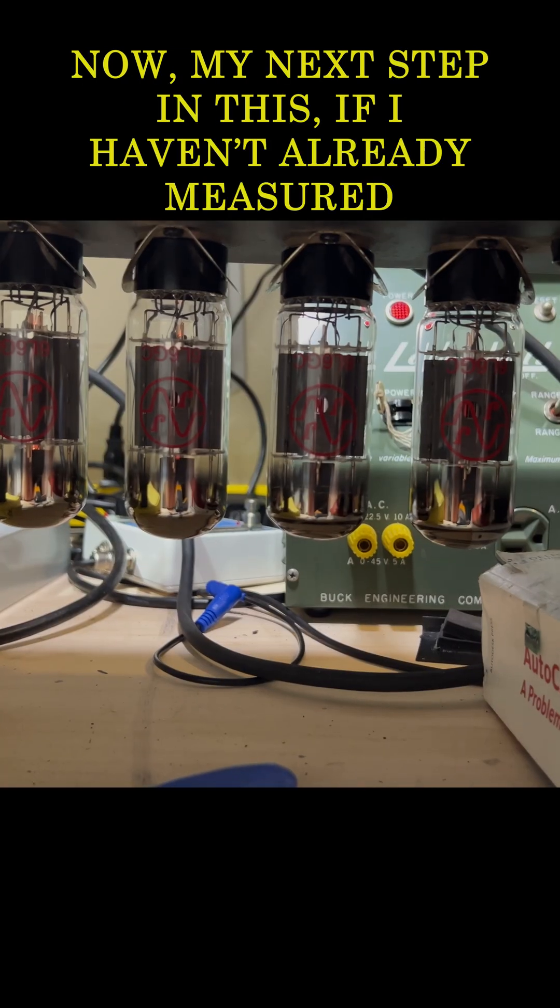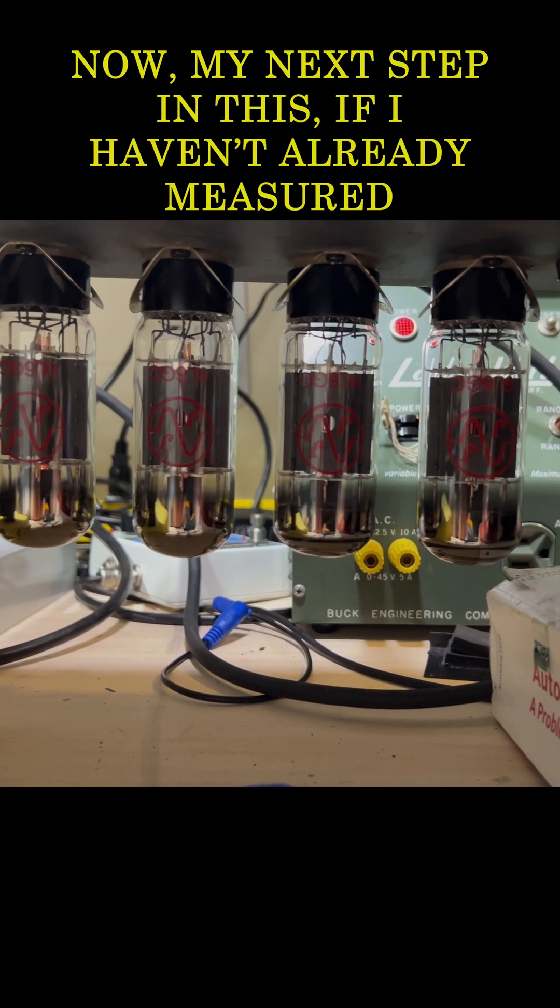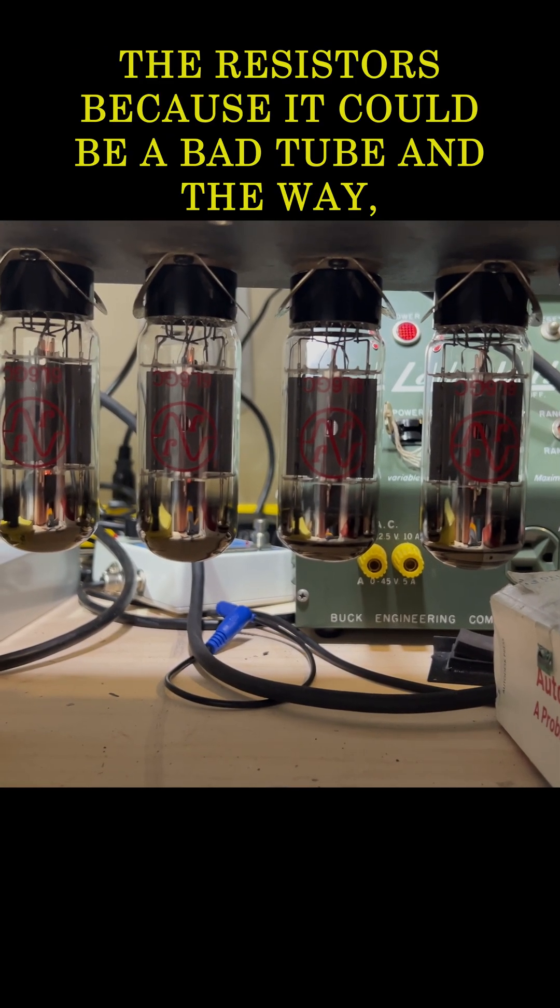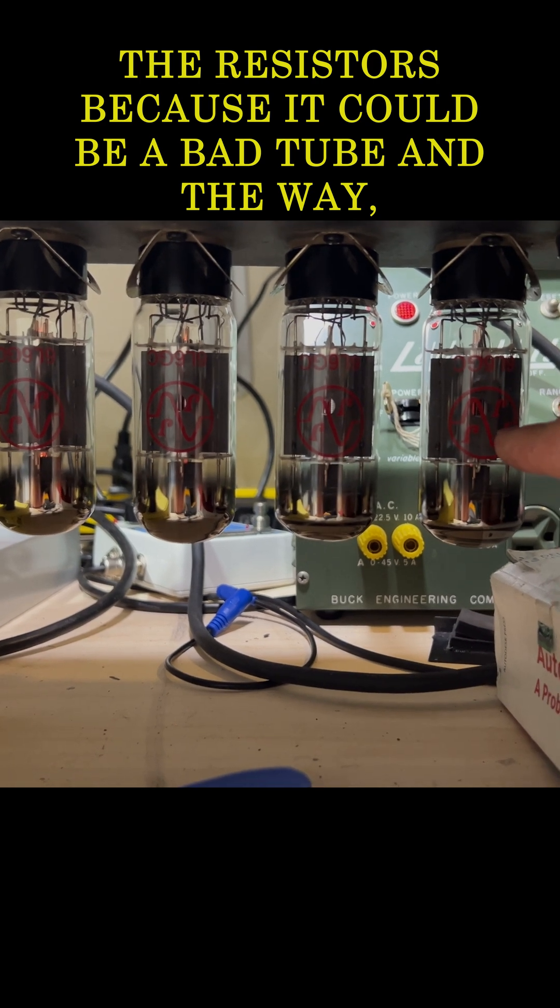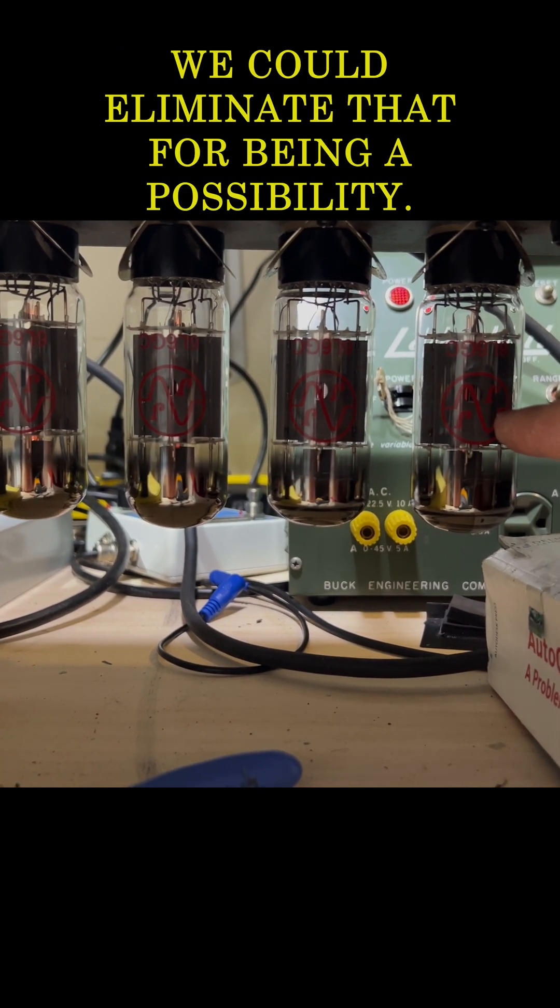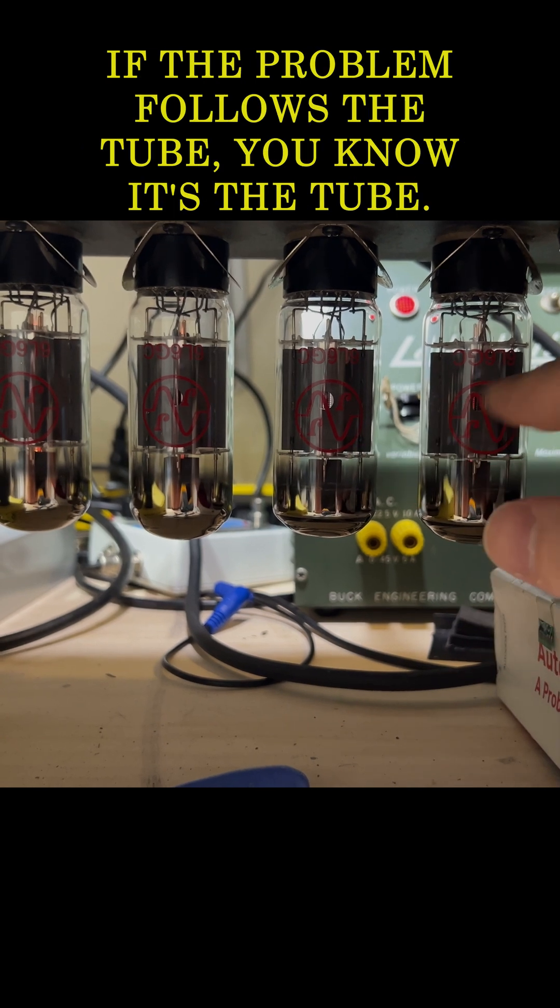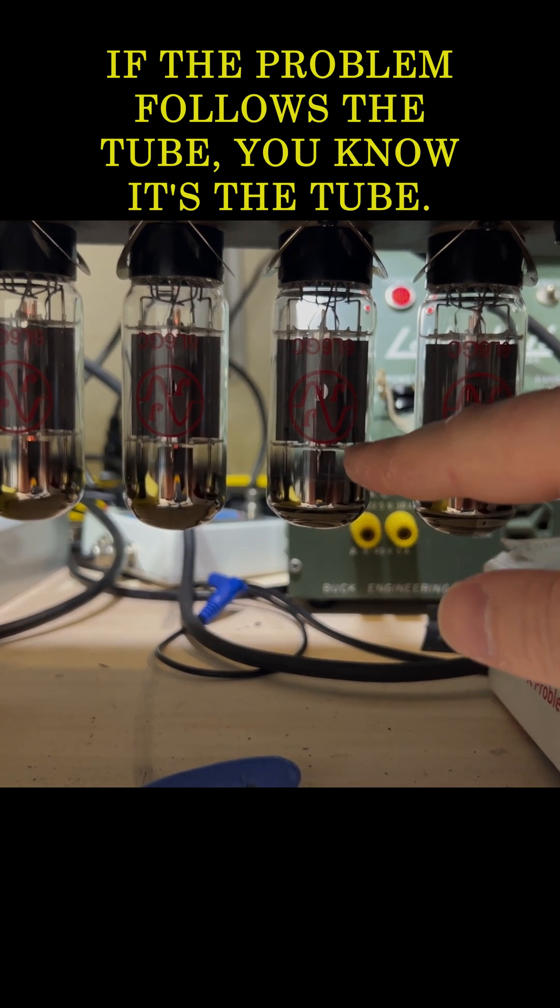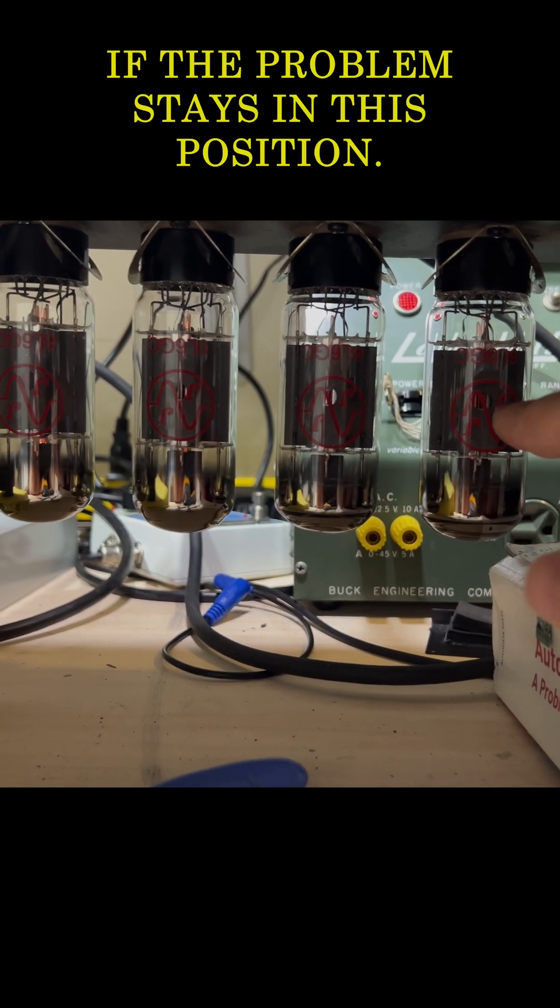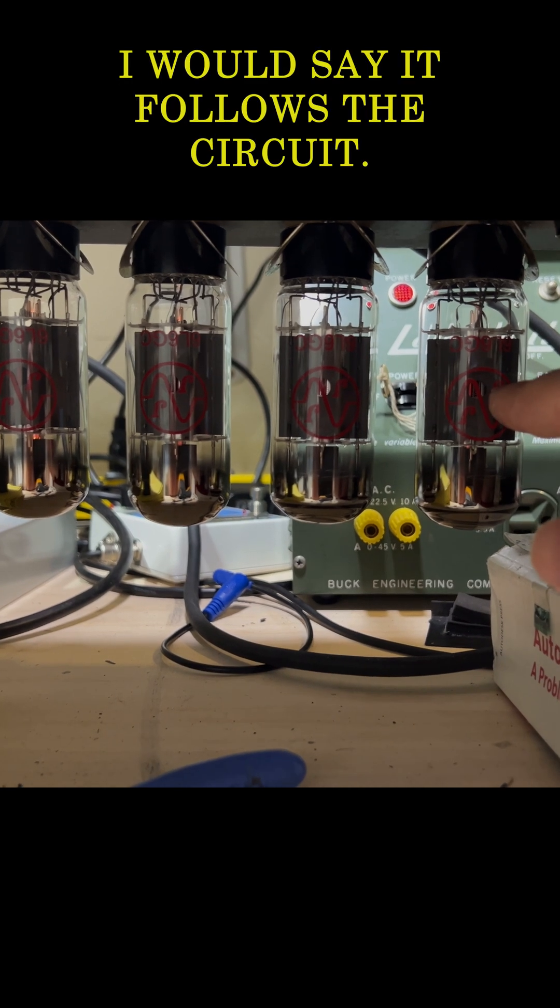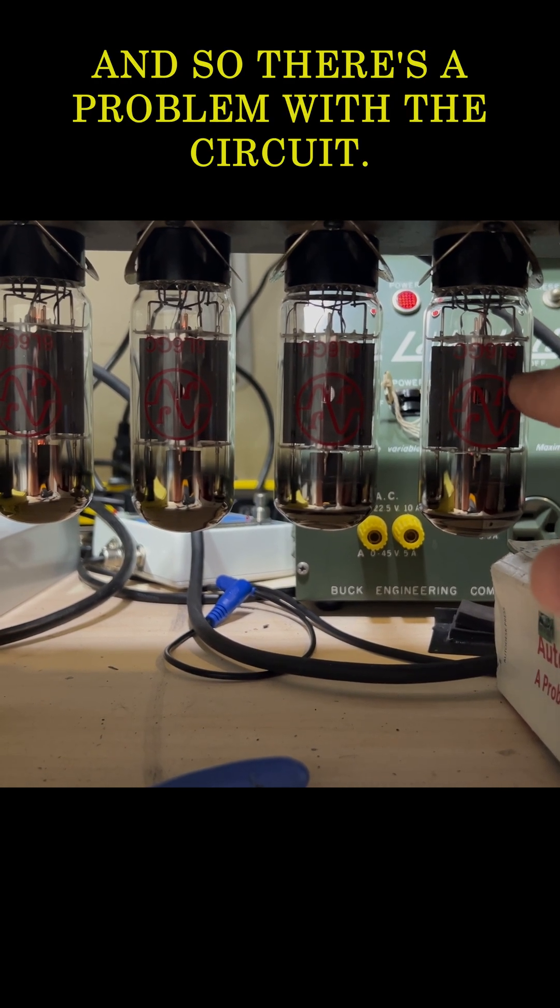Now my next step in this, if I hadn't already measured the resistors, because it could be a bad tube. And the way we could eliminate that from being a possibility: let's take this tube, swap it with this one. If the problem follows the tube, we know it's the tube. If the problem stays in this position, it follows the circuit. So there's a problem with the circuit.